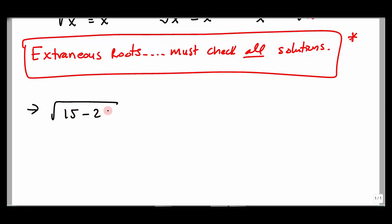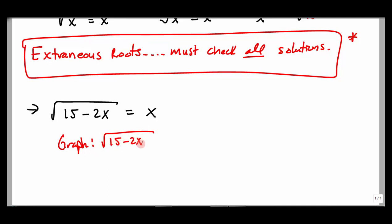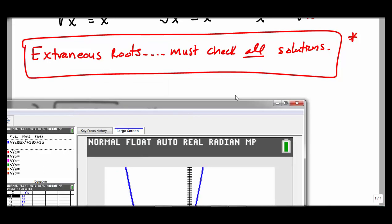Let's look at the square root of 15 minus 2x equals x. The square root sign goes over the 15 minus 2x — everything on the left-hand side — and the right-hand side is just equals x. To graph this, everything has to be set equal to 0, so I have the square root of 15 minus 2x, then subtract the x and set it equal to 0. Notice the minus x is not underneath the radical.